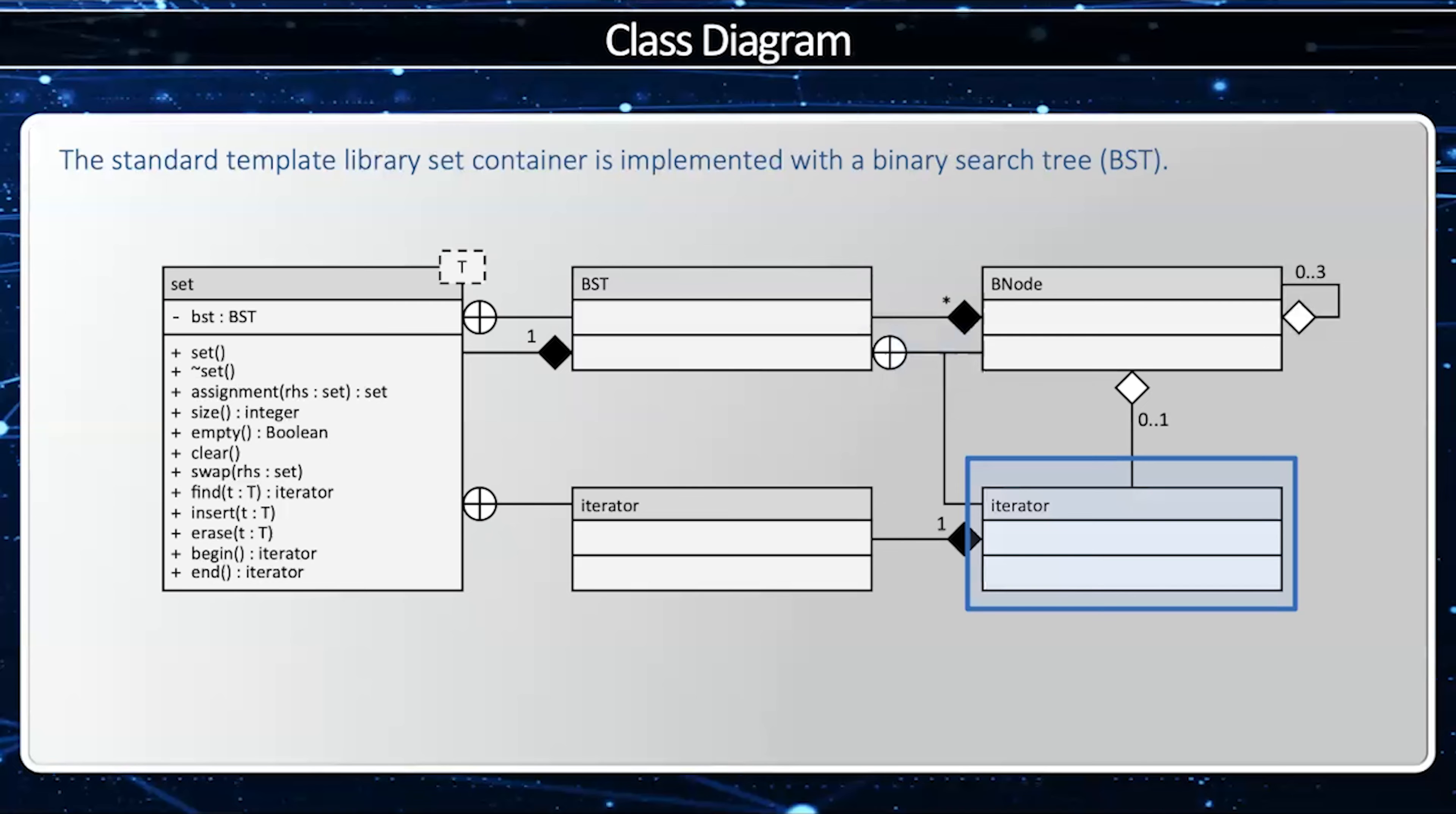Next, we have an iterator. The BST has an iterator, which makes it convenient for the client to iterate through all the elements in the BST. This iterator is going to point to zero or one B node. One B node, if the iterator is a valid iterator, or zero, if it's the end iterator or the null iterator, in which case it's not referring to any node at all. Now, the iterator is a nested class within BST. Well, so is the B node. The B node is a private nested class. In other words, the client can't see it. But the iterator is a public nested class. In other words, we want to encourage the client to use the BST iterator.